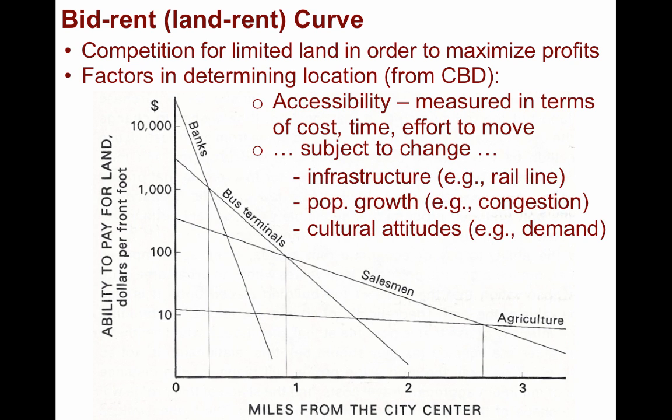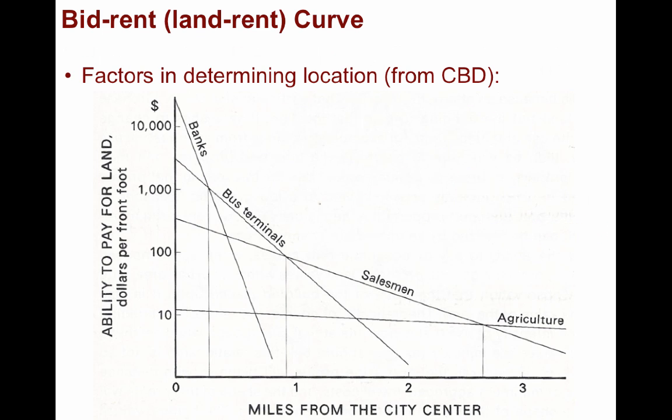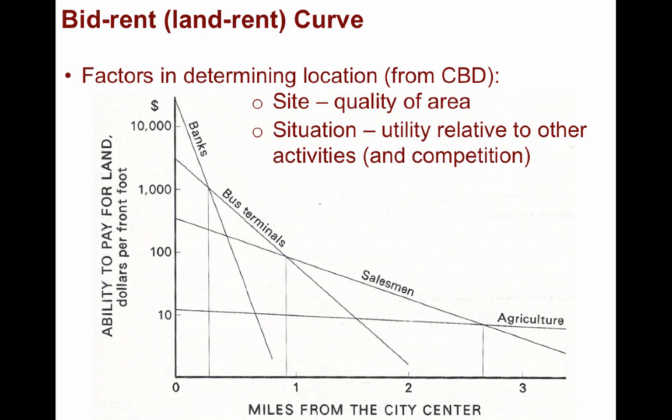Here are a few examples. If the infrastructure changes, such as the development of a light rail line offering cheap public transportation, accessibility could increase. Or if population growth expands, causing more congestion, accessibility could decrease. Cultural attitudes often change as well, which can affect the profitability of a given location in terms of how far people are willing to travel for a good or service. Site characteristics, or the quality of an area, clearly affect accessibility, as does the situation of a particular business at a location — we must consider other activities offered around it, and especially competing businesses.